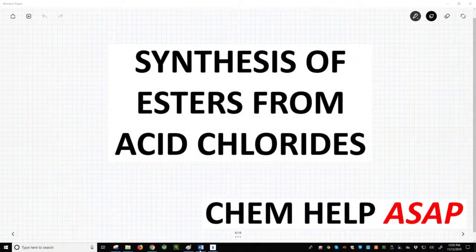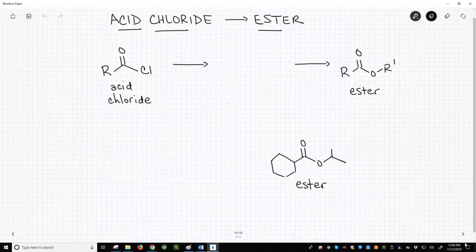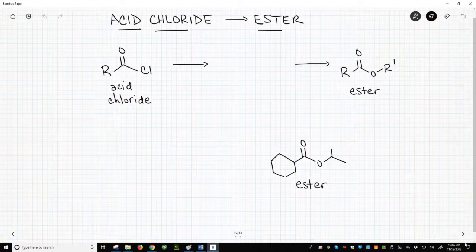Hello from Chem Help ASAP. Let's make an ester. To make an ester, an acid derivative, we start with an acid chloride.